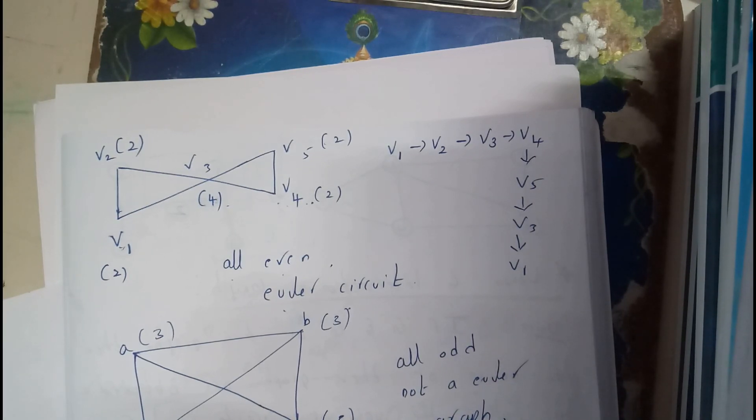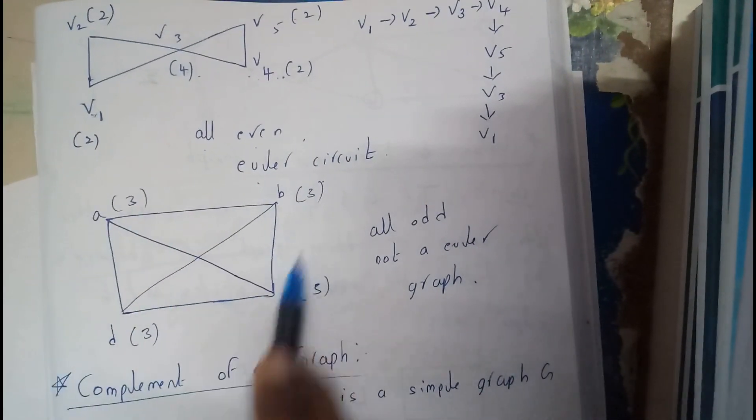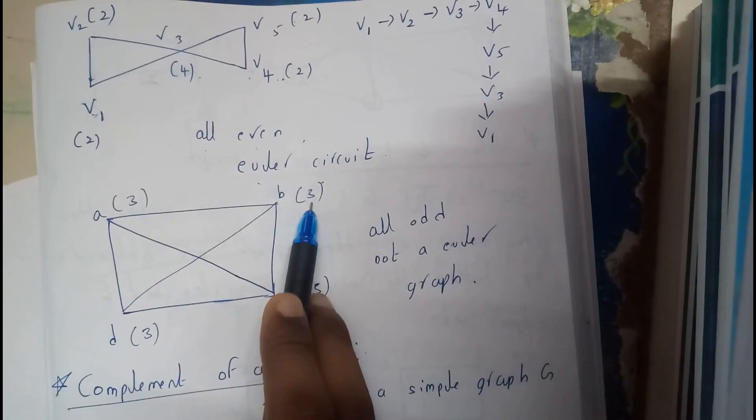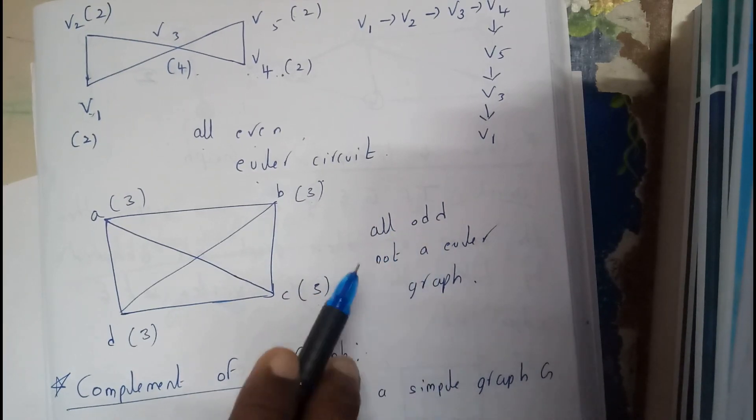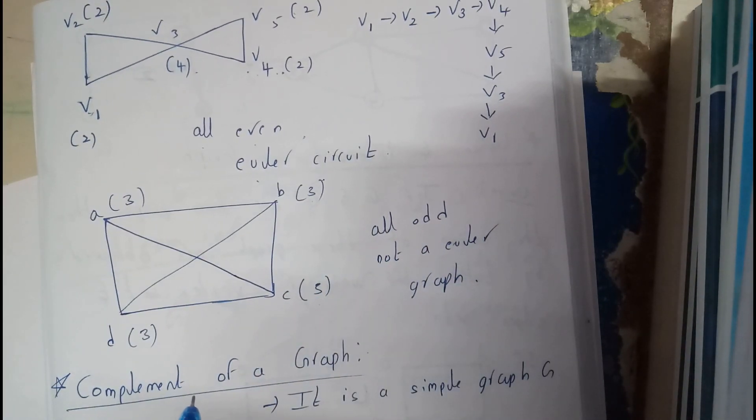Let us take another example. This is the example. At every place it is three, three, three, three, three. All are odd, so it is not an Euler path. That's it.